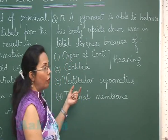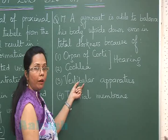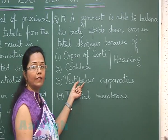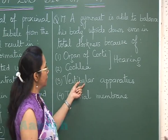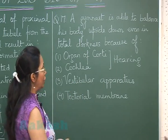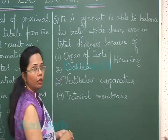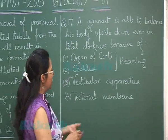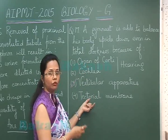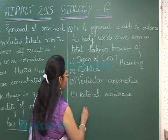The organ of Corti is the sensory structure within the cochlea. The vestibular apparatus is formed of the semicircular canals, utricle, and saccule, and is concerned with balancing. So our choice would be vestibular apparatus. The tectorial membrane is again part of the organ of Corti, so it is also concerned with hearing only. So our answer is option 3.